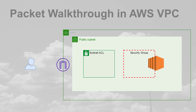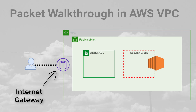Before we get started with the AWS console, let's review a quick packet walkthrough in a very simple VPC. Packets get initiated from the end user on the internet, and the first component they hit is the Internet Gateway. This is responsible not only for routing my packet inside the VPC but also for performing the public to private IP translation.